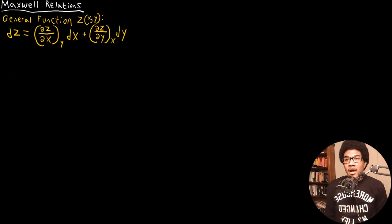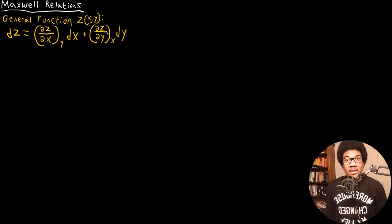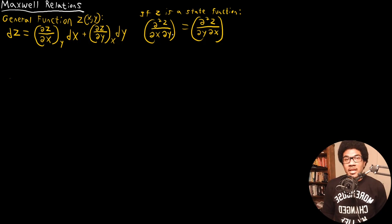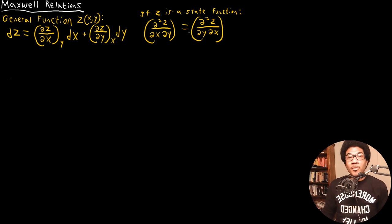In this video, we're going to discuss Maxwell relations. In order to begin, consider a general function z that's a function of x and y. We know that the total derivative will look something like this, and we know that if z is a state function, then the mixed partial derivatives are going to be equal — the second derivative of z with respect to dx dy equals the second derivative of z with respect to dy dx. This is true for any state function, and in thermodynamics we have a lot of them: internal energy, enthalpy, and our two free energies.